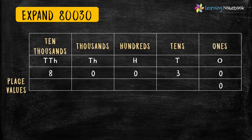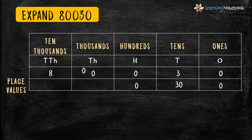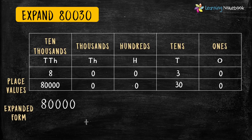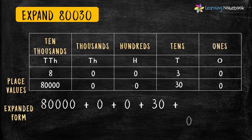The place value of 3 is 30. The place value of the next 0 is again 0. In the same way, the place value of the next digit is also 0. And the place value of 8 is 80,000.